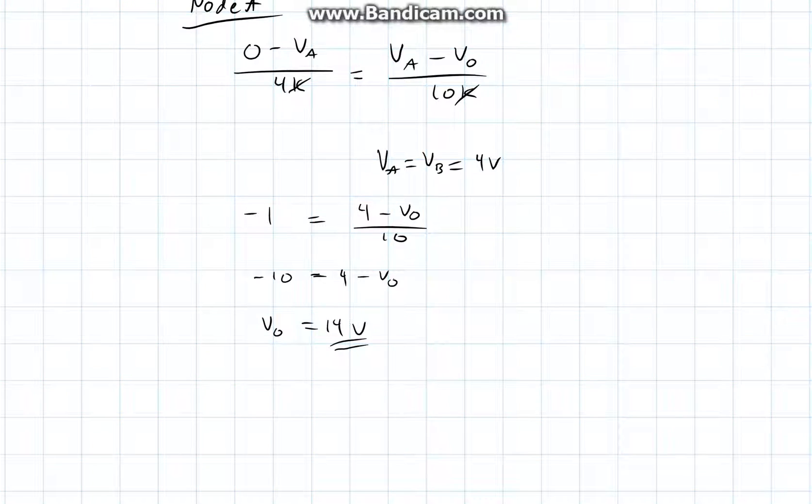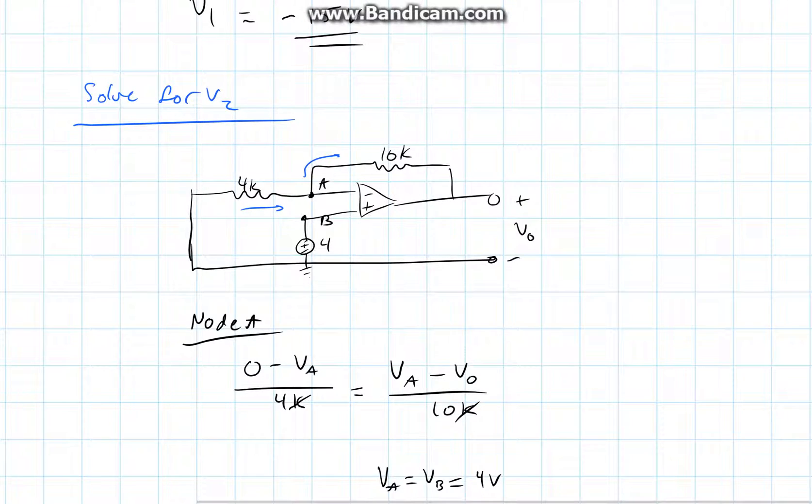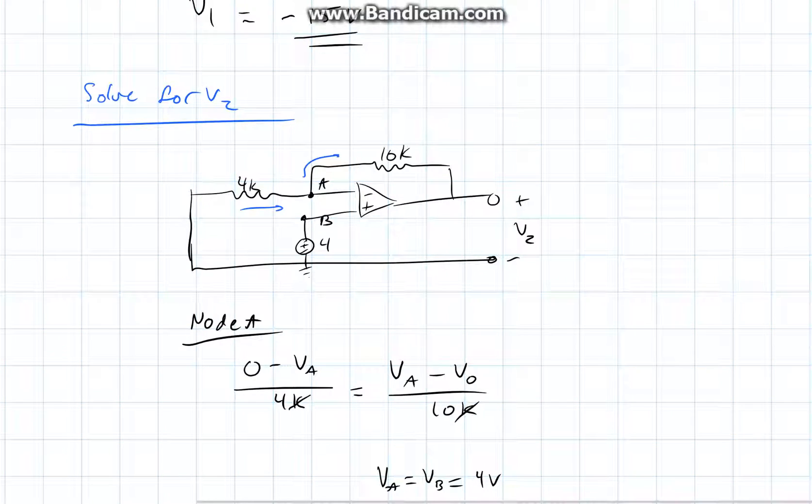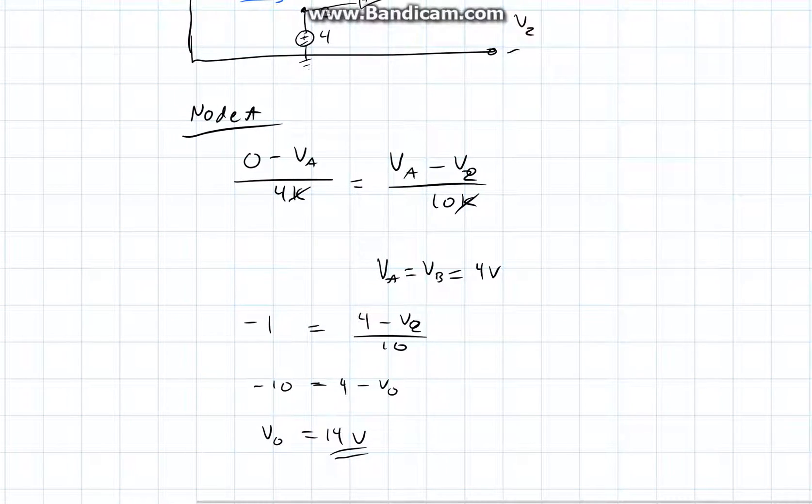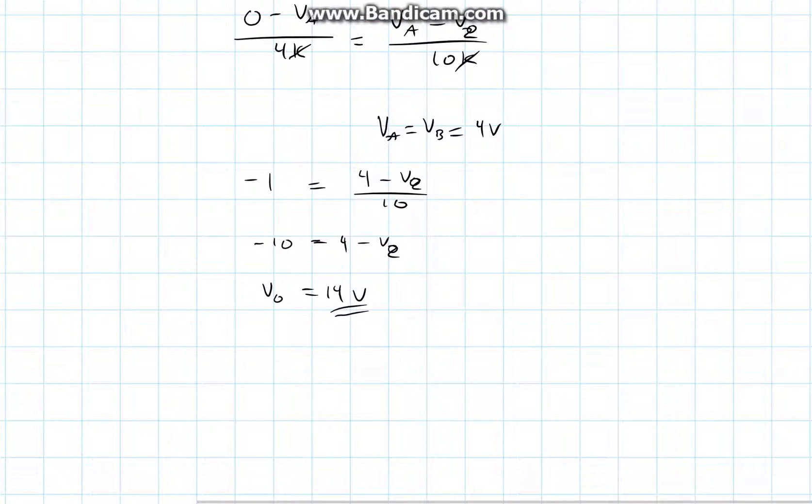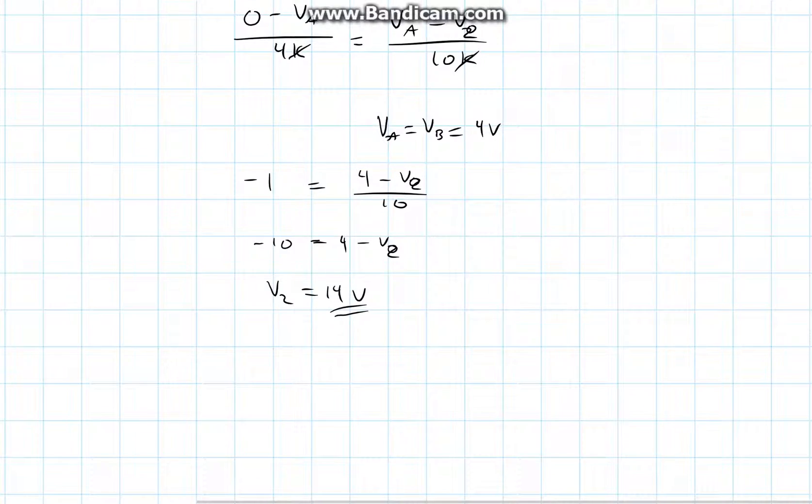And I made the same mistake again by calling this V0. That's V2, this is V2, this is V2, this is V2. So we actually solved for V2.